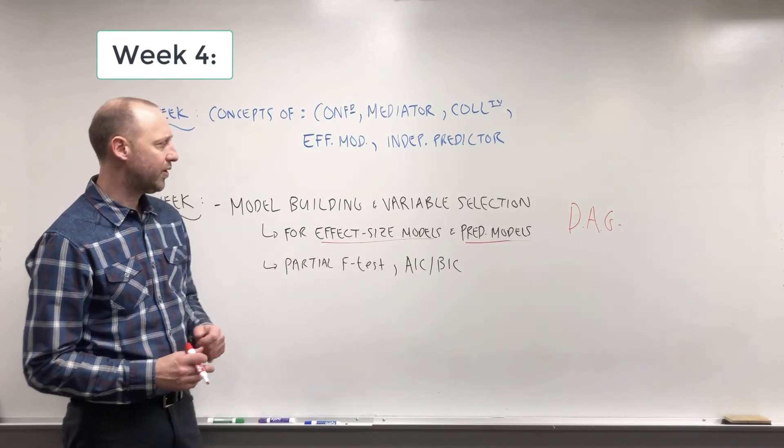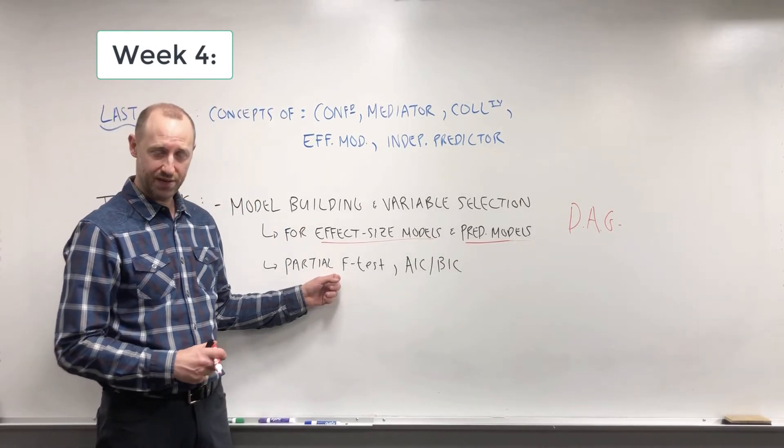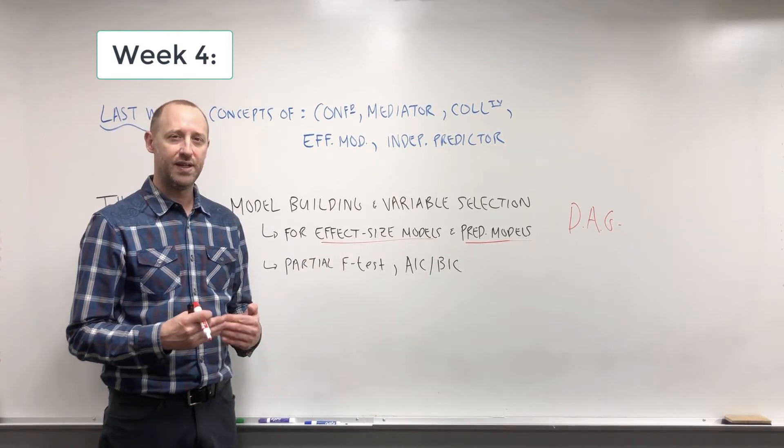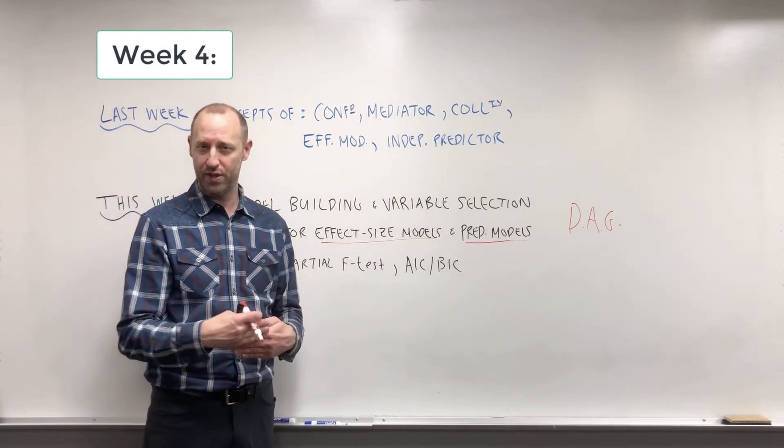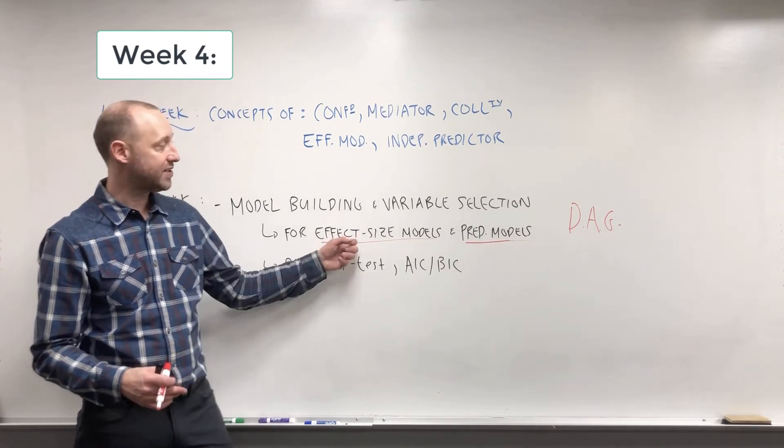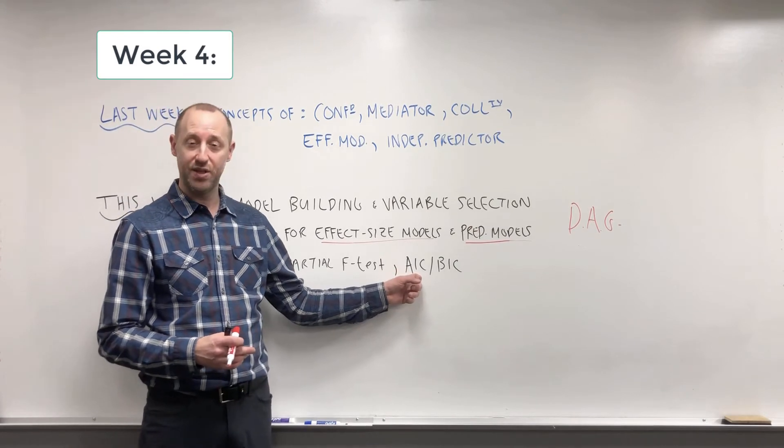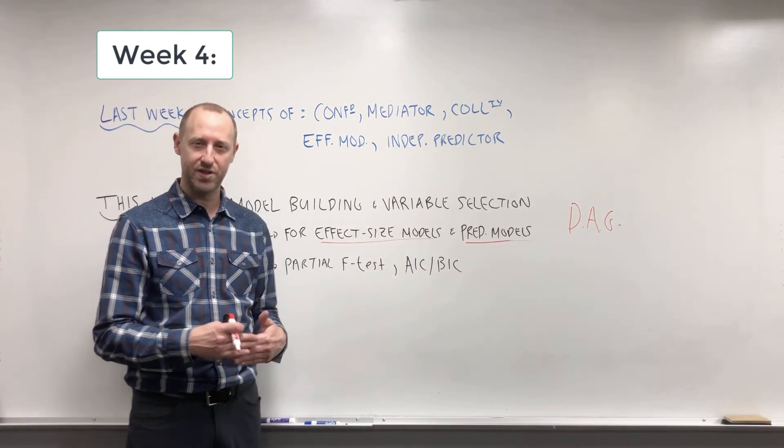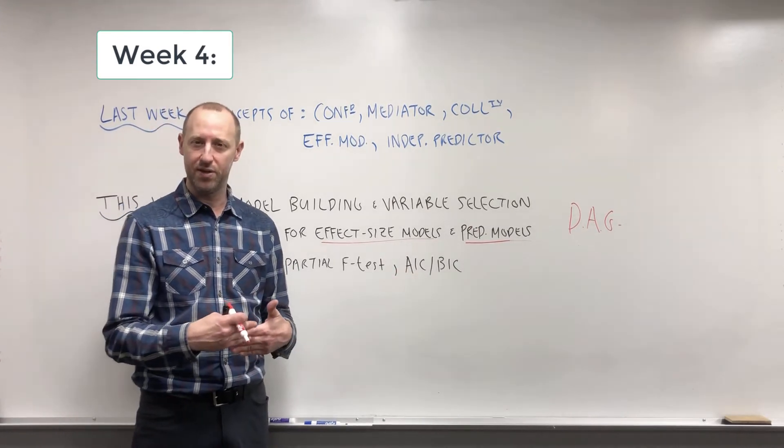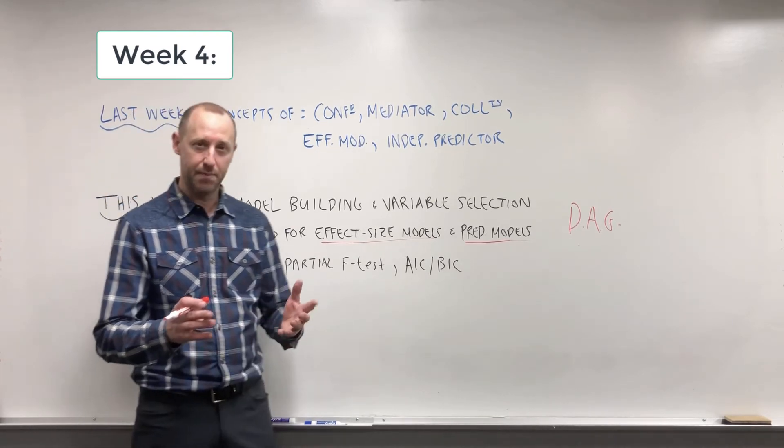When talking about model building and variable selection procedures, we're going to talk a bit about the partial F test. This is a way for testing adding or removing terms from a model, and we're going to look at how that test can be used when building effect size models or building predictive models, as well as the concept of AIC or BIC. These are other measures used for comparing competing models to help us decide on which model we think is the best model.